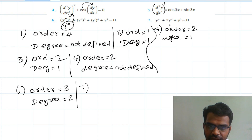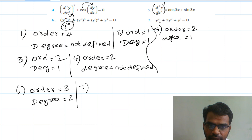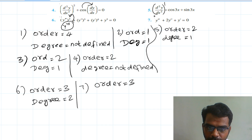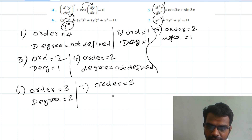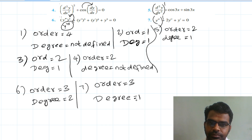Seventh question: y''' + 2y'' + y' = 0. The highest order derivative is y''', so order equal to 3. The highest power value of y''' is 1, so degree equal to 1.